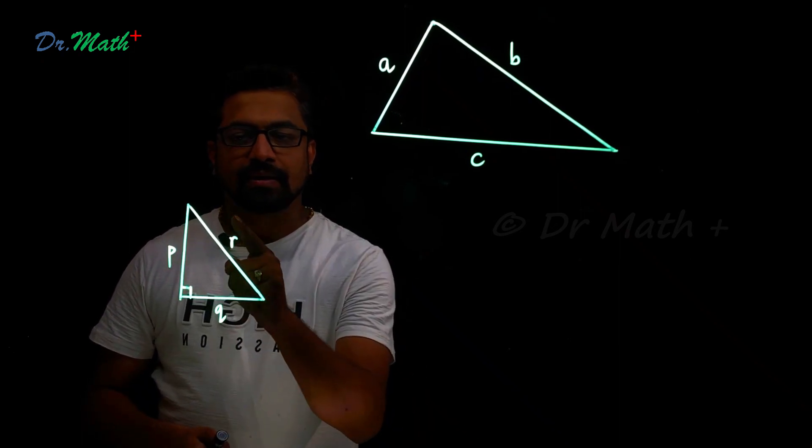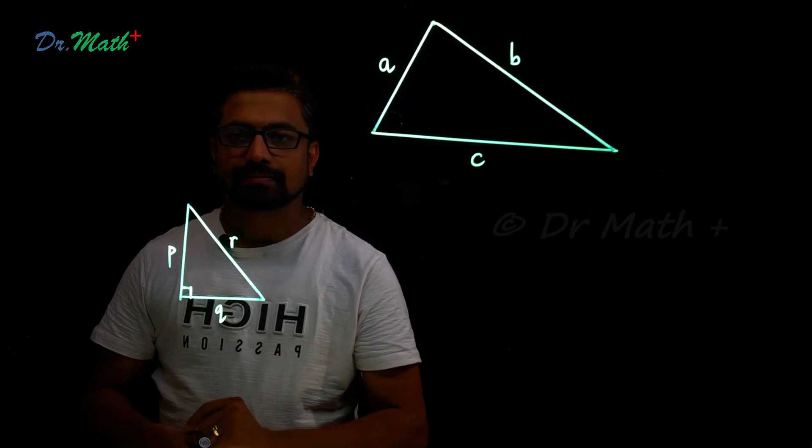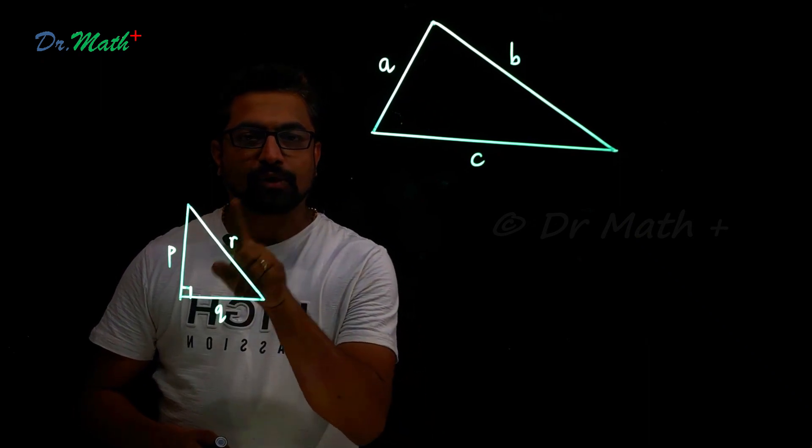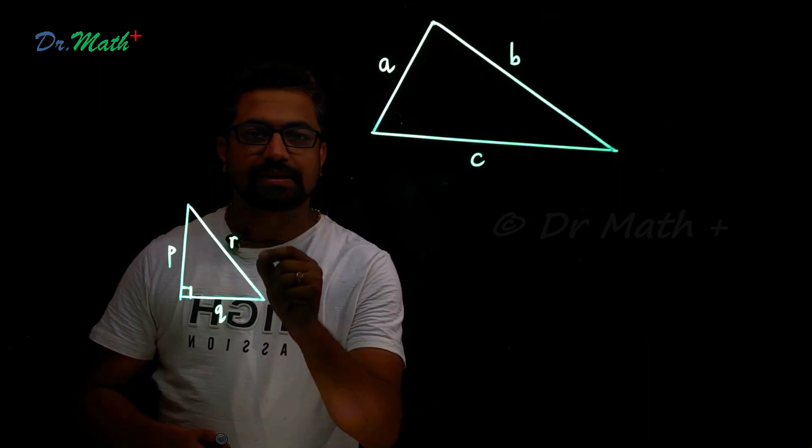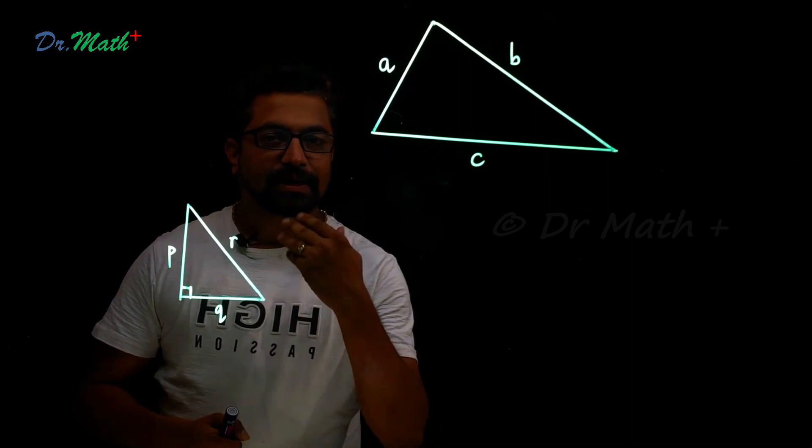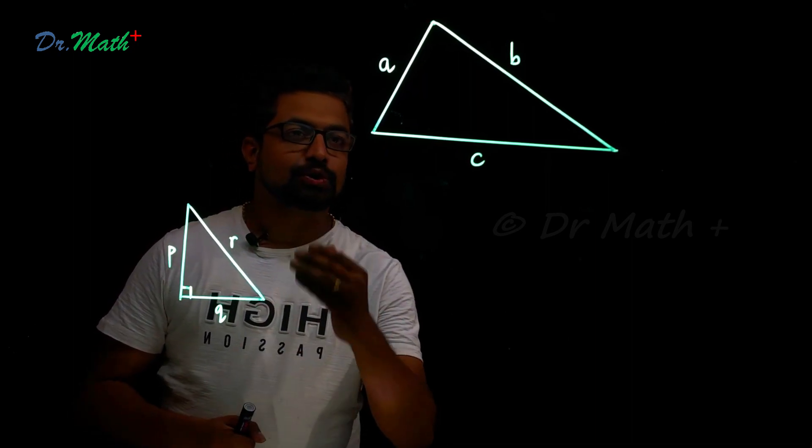That means p is less than r or q is less than r. That means one of these two legs is lesser than the hypotenuse in a right angle triangle. Let's make use of this concept to show that sum of any two sides of the triangle is greater than the third side.